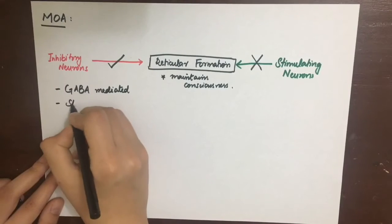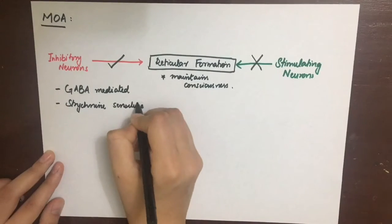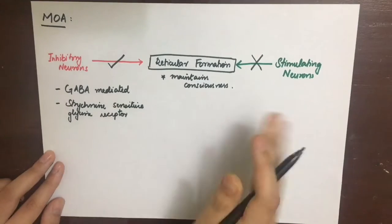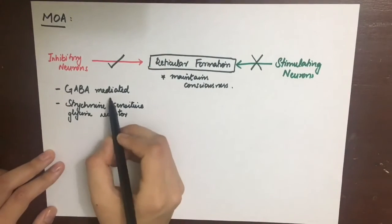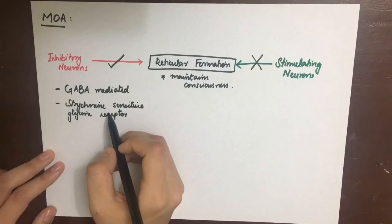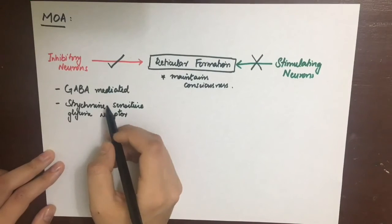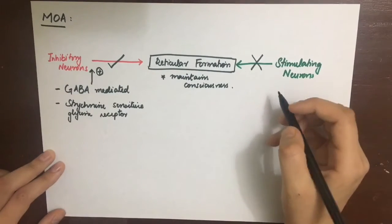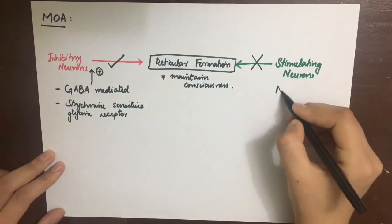Firstly, we can do GABA-mediated current accentuation by halogenation anesthetics or ether. Secondly, we can also stimulate the strychnine-sensitive glycine receptor by ether. Both these ways, we are stimulating the inhibitory neurons so that they can inhibit the reticular formation.